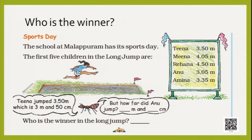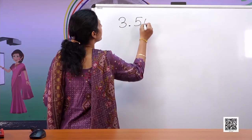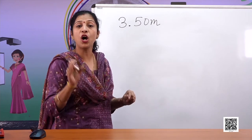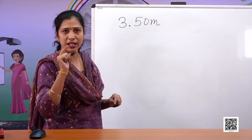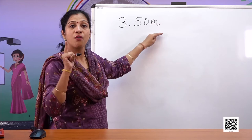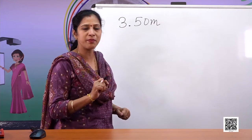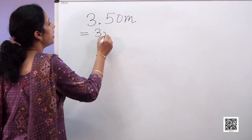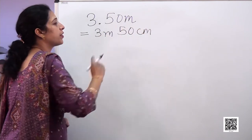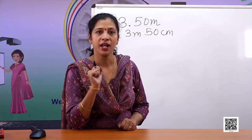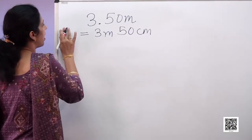Tina jumped 3.50 meters — what does that mean? In the last episode we learned that the decimal part represents the part of a meter which is less than 1 meter. So 0.50 meter is nothing but 50 centimeters, because 1 meter equals 100 centimeters. So 3.50 meters is 3 meters 50 centimeters — that is the length covered by Tina.